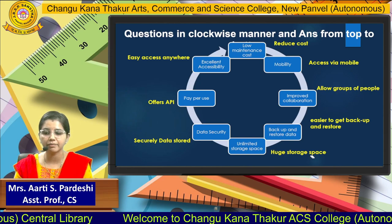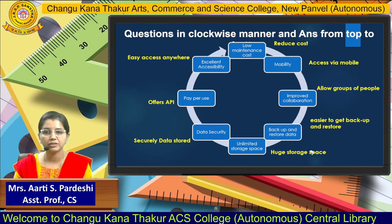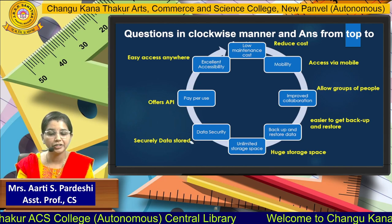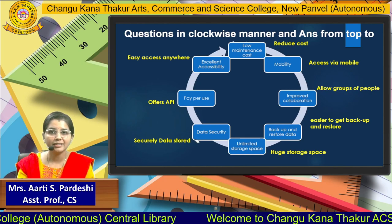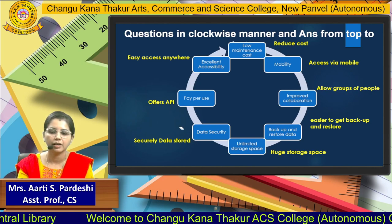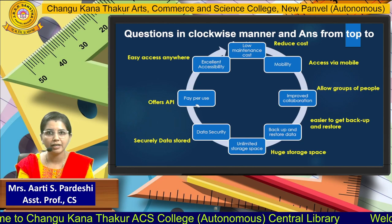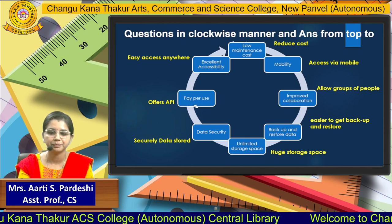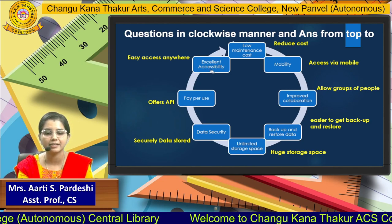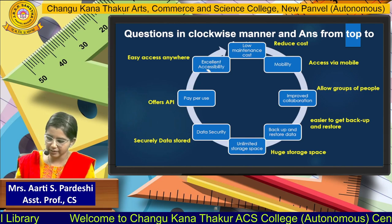Unlimited storage space relates to huge storage capacity. All these keywords — reduce cost, mobile access, group sharing, easy access, backup and restore, huge demand — will help you create short notes. Security is a main feature; in Gmail, two-factor authentication is required. Cloud also offers API — application programming interface. As per your package you get the service, and you can access it easily — the technical term for that is excellent accessibility.